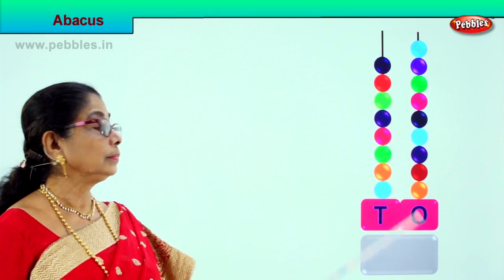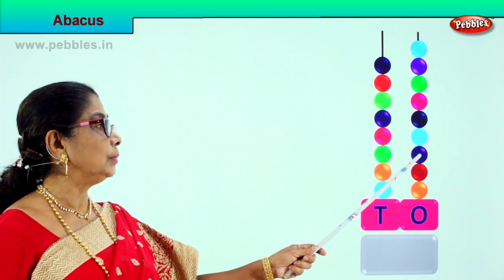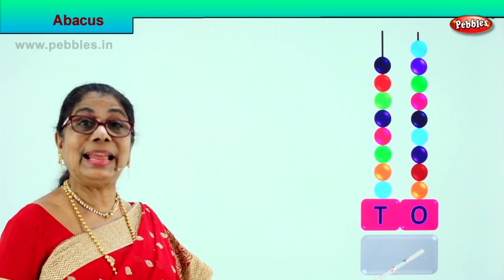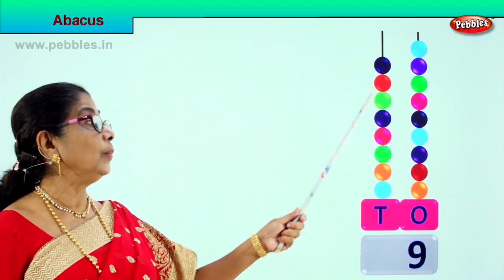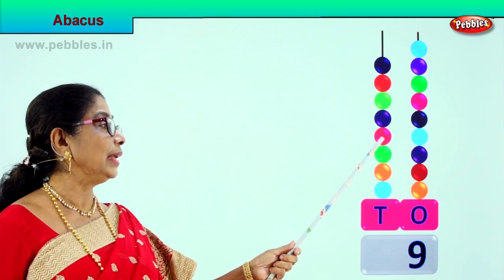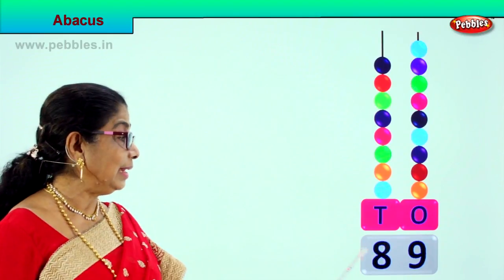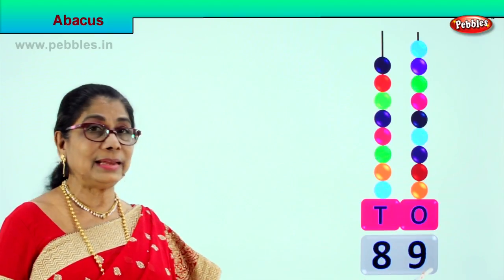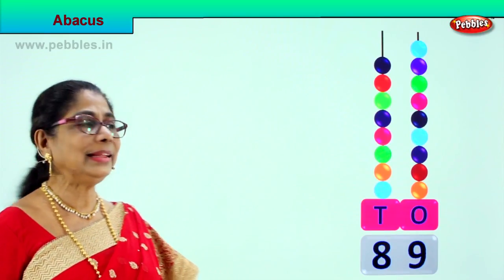Let's count all the beads in the ones place: 1, 2, 3, 4, 5, 6, 7, 8, 9 — so we write nine in the ones place, meaning nine ones. Now we go to the tens: one ten, two tens, three tens, four tens, five tens, six tens, seven tens, eight tens — there are eight beads, so we write eight here. Eight tens is eighty and nine ones: eighty-nine. Are you enjoying it? Let's take another sum.